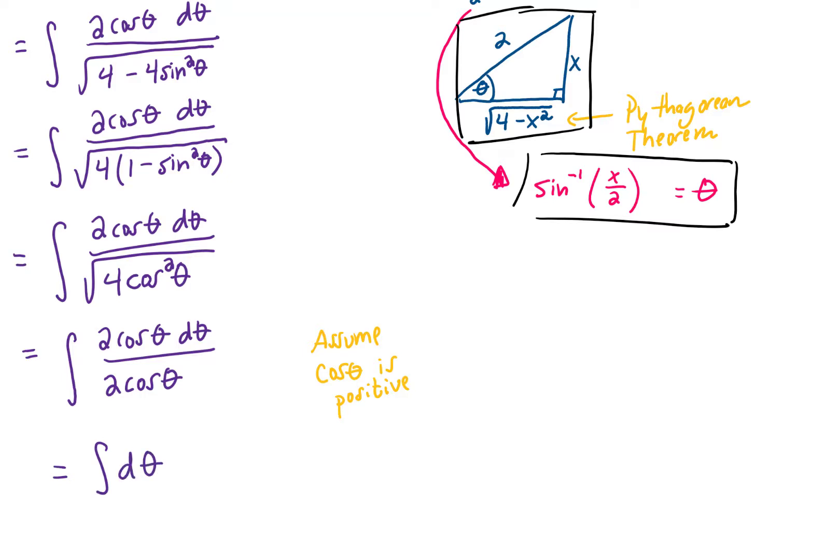And then we get to cancel the 2 cosine theta in the numerator with the 2 cosine theta in the denominator. That gives us the integral of d theta. Integrating that with respect to theta gives us theta.